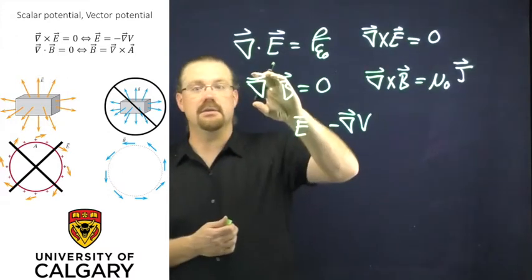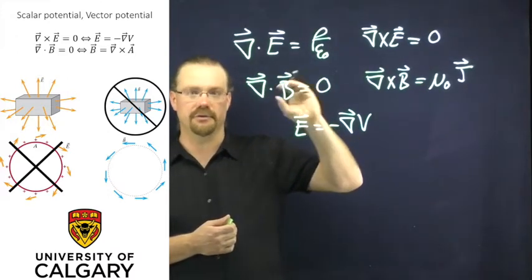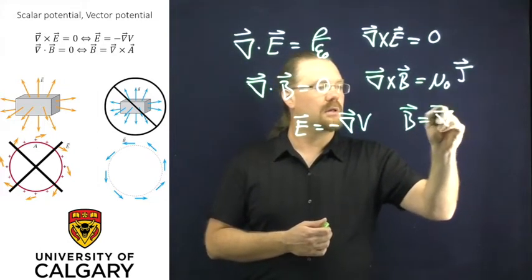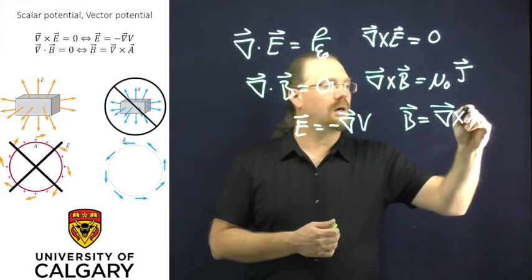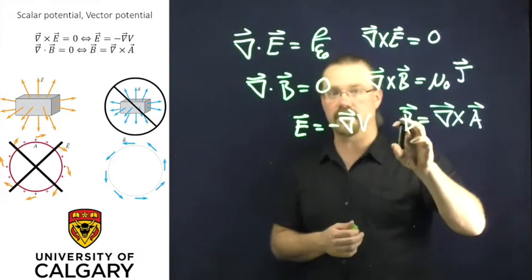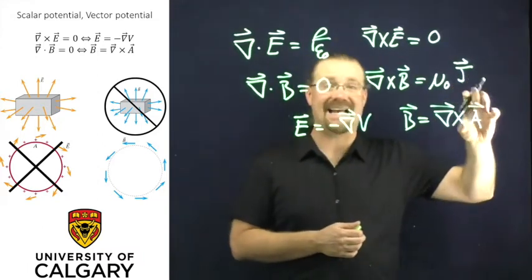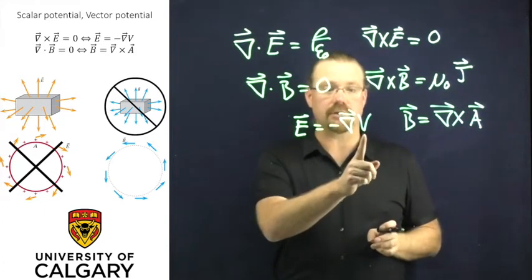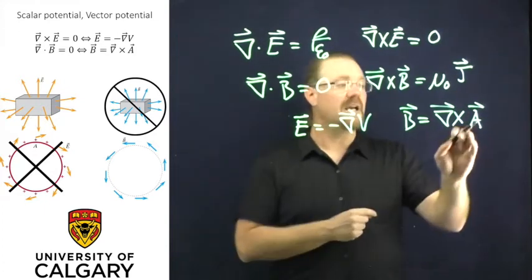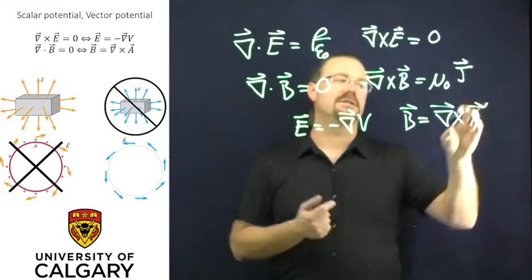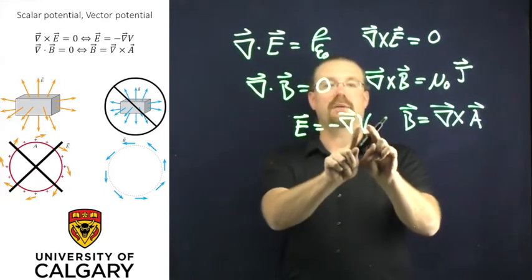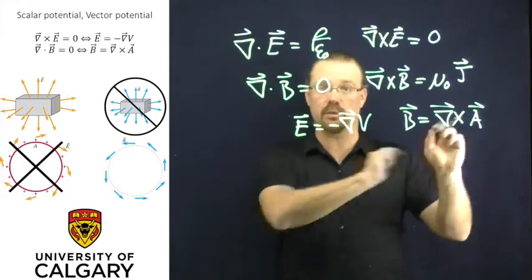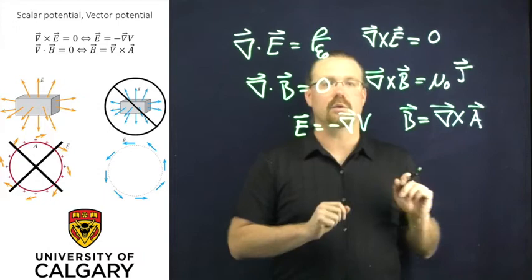And then likewise, because the B is divergence-less, this means that we can write our magnetic field in terms of some magnetic vector potential. So here we have the scalar electric potential, known as the voltage or the electric potential, and here we have the magnetic vector potential, which sadly is not nearly as useful as V, so you've probably come across V before. You may not have come across A before, but I promise we will talk more about A over the course of the term.